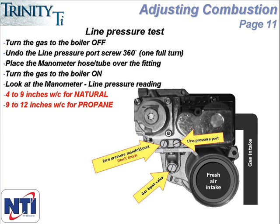To perform the line pressure test, start by turning off all the gas coming into the boiler. When you look at the gas valve from the right-hand side of the unit, you'll see three adjustment screws. The one on the top right is the line pressure port. Loosen it by turning the screw one complete turn counter-clockwise.